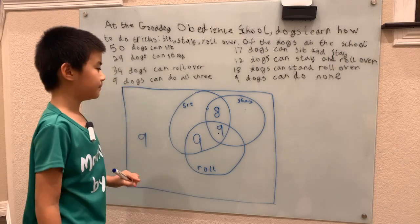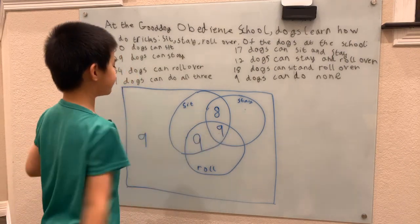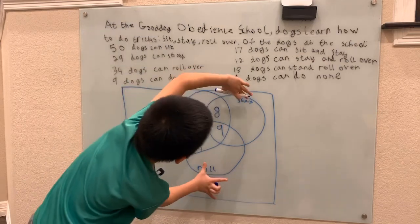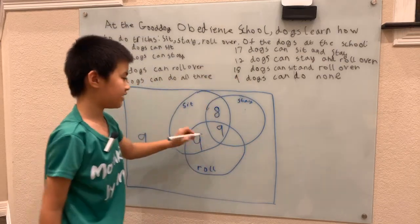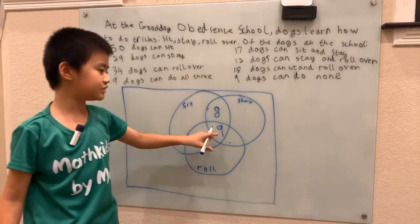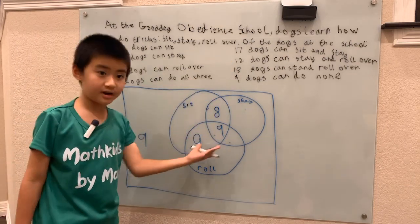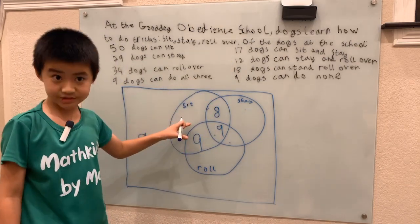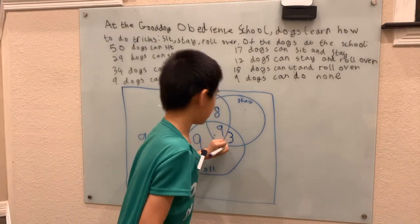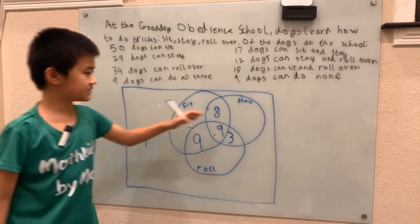The last region adjacent to the center is for dogs that can stay and roll. 12 dogs have that overlap, so those two sections sum to 12. Since none of those dogs can also sit, we have 12 minus 9, giving us 3 more dogs that can only stay and roll.